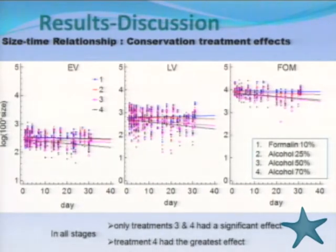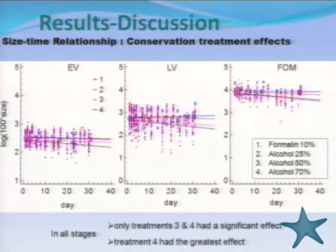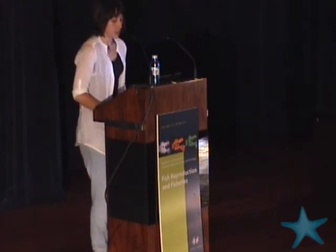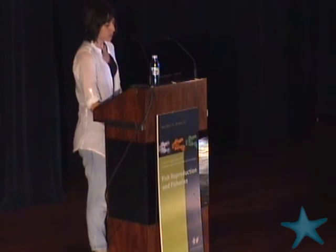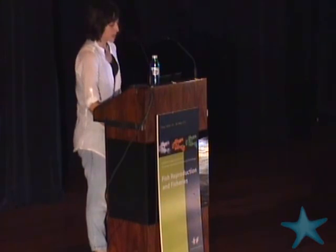Moving to our results: we can see in three figures how the oocyte size increases as we go from the first to the third group, from early vitellogenesis to final oocyte maturation. According to our analysis of covariance, there was a significant effect only for treatments three and four — corresponding to alcohol 50% and 70% — and no significant effect for the first two treatments, formalin and alcohol 25%. The alcohol 70% treatment had the greatest effect.